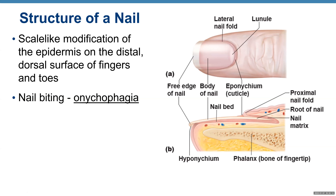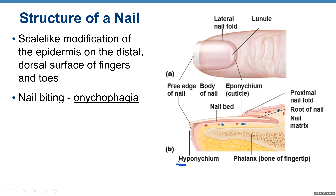Another appendage of the skin is nails — they are scale-like modifications of the epidermis on the distal dorsal surface of fingers and toes. Looking at the structure: you have the free edge of a nail, body of nail, root of nail, nail matrix, proximal nail fold, and a cuticle — also called the eponychium. Underneath the free edge of the nail is the hyponychium, and there the nail attaches to your fingers.